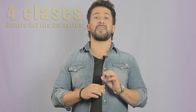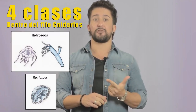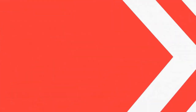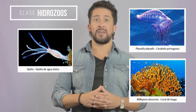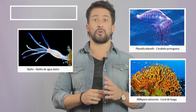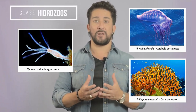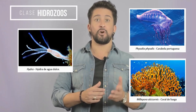Es posible distinguir cuatro clases dentro de este filo. La clase hidrozoos incluye a la hidra, a la carabela portuguesa, a Obelia y los corales de fuego. Los organismos de esta clase pueden ser solitarios o coloniales. Presentan fase pólipo asexual y medusa sexual, aunque uno de los dos puede faltar. Pueden ser marinos o de aguas dulces.